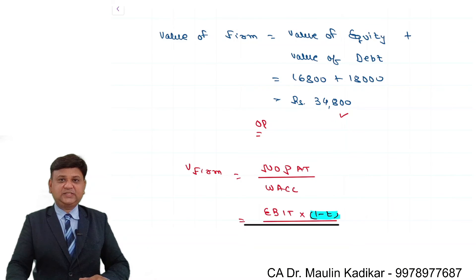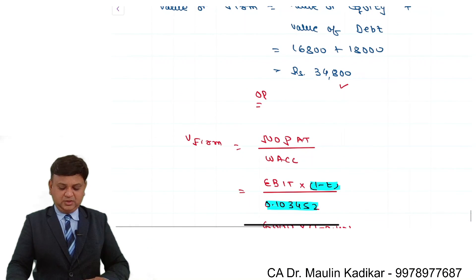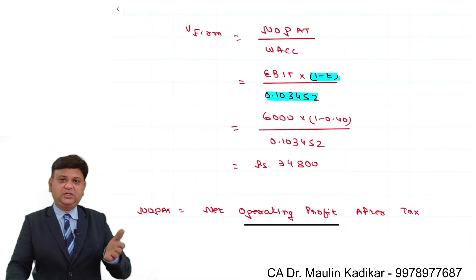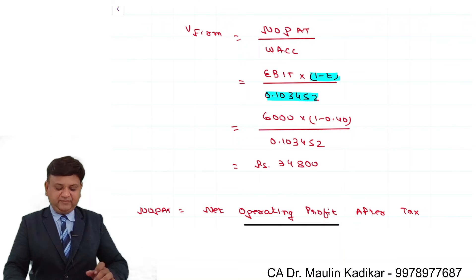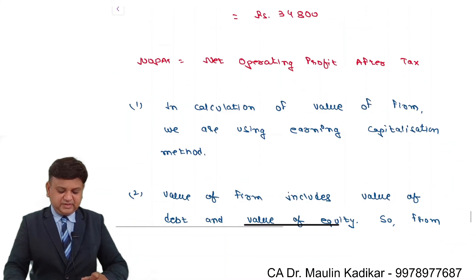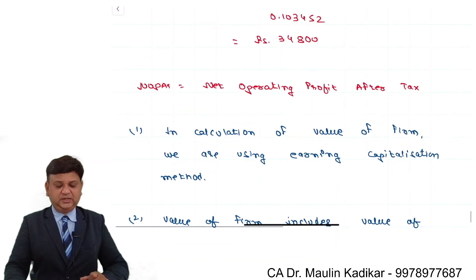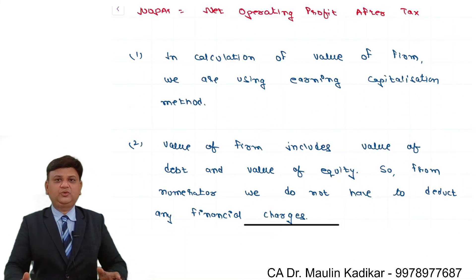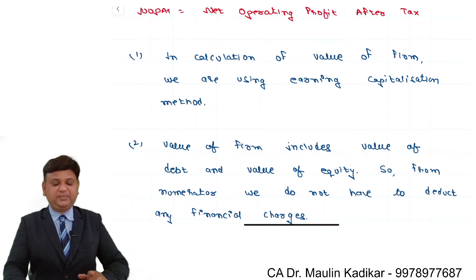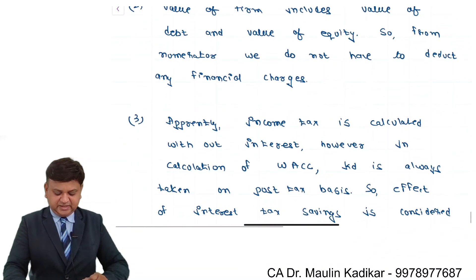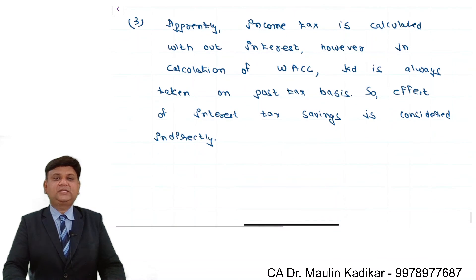Value of equity is 16,800 plus value of debt is 18,000, or the present value of future earnings — which are in the form of net operating profit after taxes. So it is earnings before interest and taxes into (1 minus t) divided by weighted average cost of capital, and it comes to 34,800. In the numerator we post-tax the operating income, so apparently the interest tax saving advantage is ignored. But when you take the weighted average cost of capital in division, the cost of debt financing includes the interest tax saving advantage — so indirectly it is always taken into account.